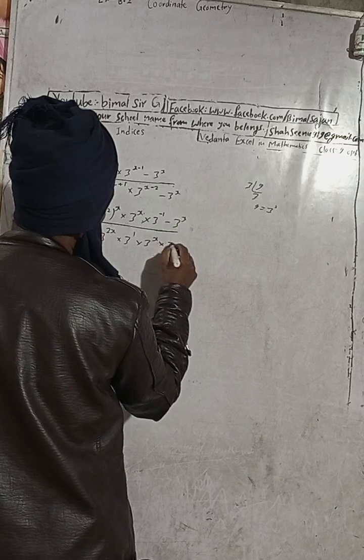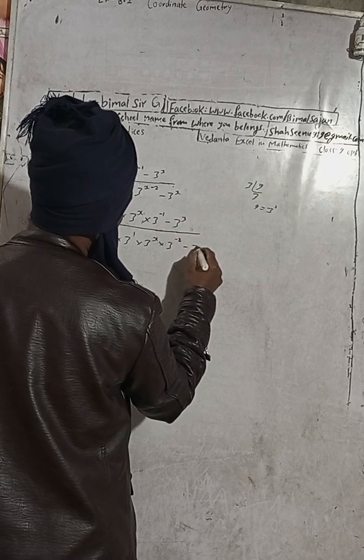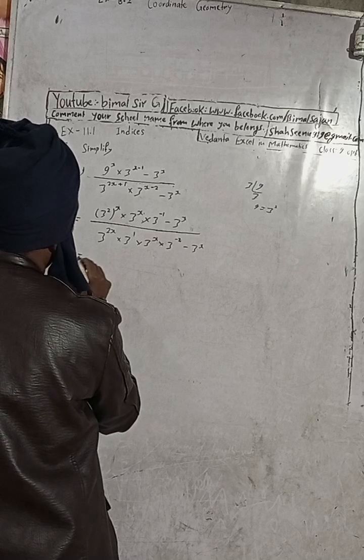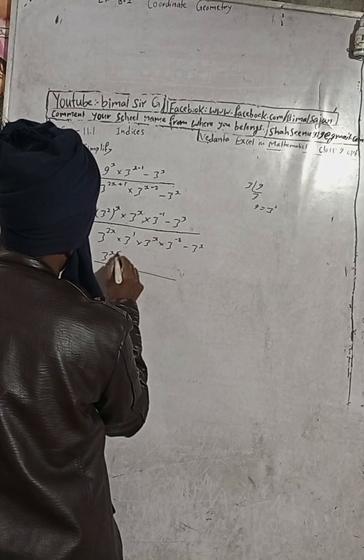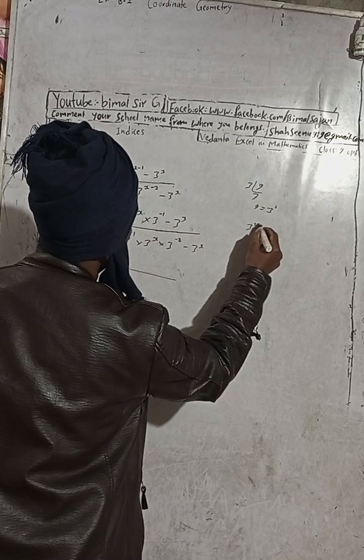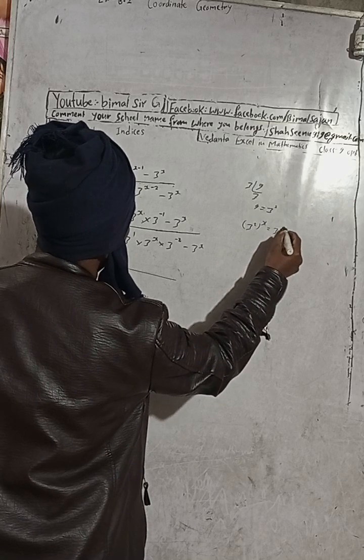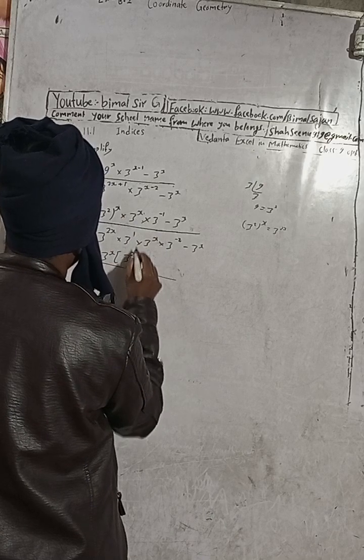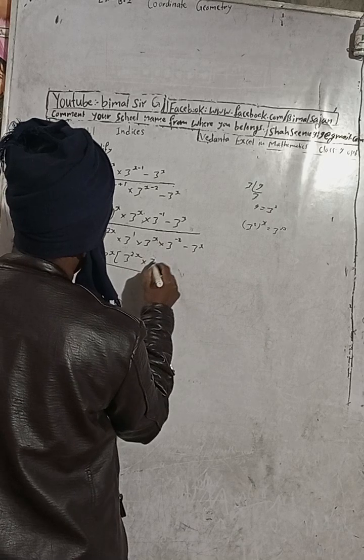So what is your common? 3^x common. Take 3^x common, so this can be written as 3 to the power 2x, and this is taken outside, so this is 3 to the power minus 1.